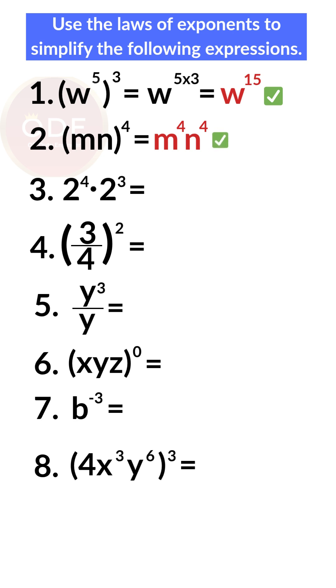Number 3: 2 to the 4th times 2 to the 3rd equals 2 to the power of 4 plus 3, which equals 2 to the 7th power.